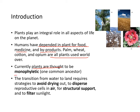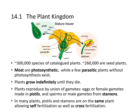Currently, plants are thought to be monophyletic — meaning one common ancestor. The transition from water to land requires strategies to avoid drying out, to disperse reproductive cells in air, provide structural support, and to filter sunlight. In the plant kingdom, there are about 300,000 species of catalogued plants, and 260,000 of them are seed plants. Most plants are photosynthetic, while a few parasitic plants do exist and they don't have photosynthesis.